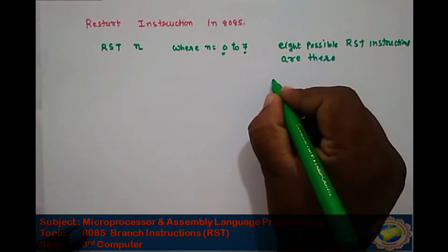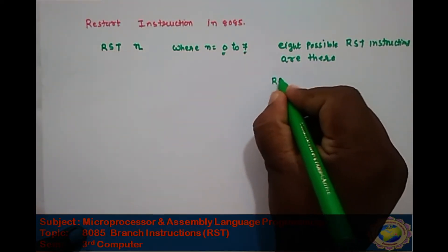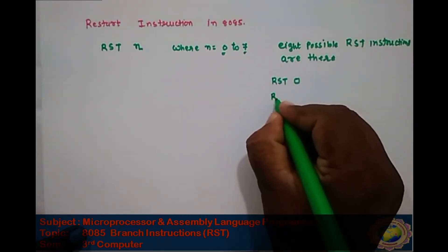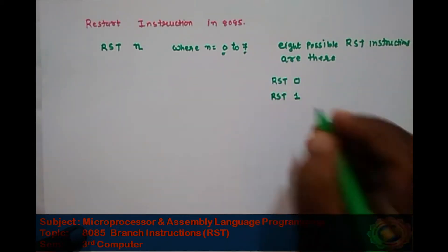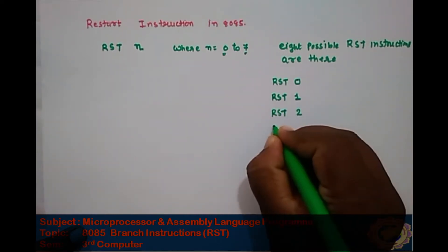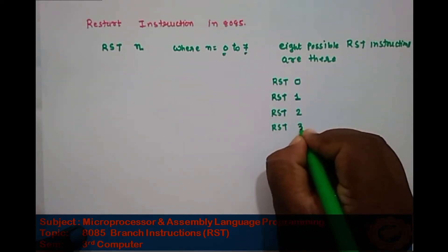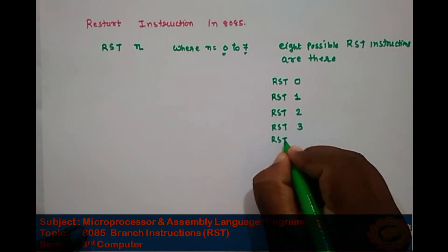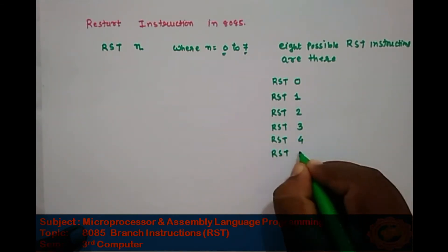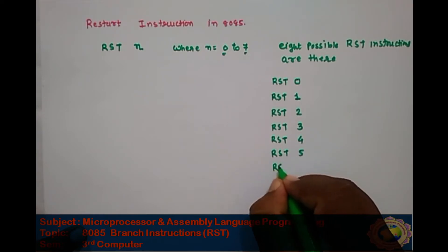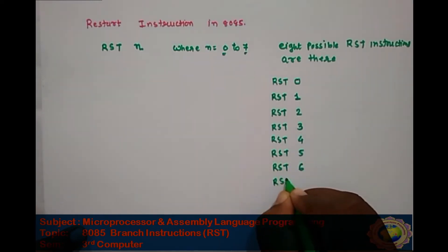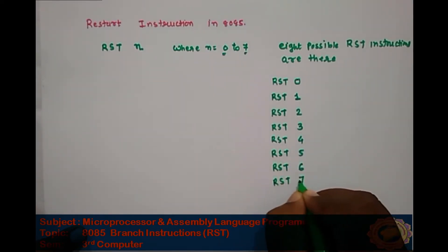For example, the RST instructions are: RST 0, RST 1, RST 2, RST 3, RST 4, RST 5, RST 6, and RST 7.